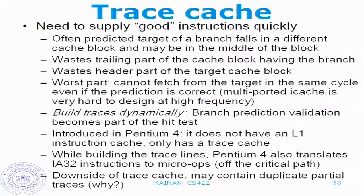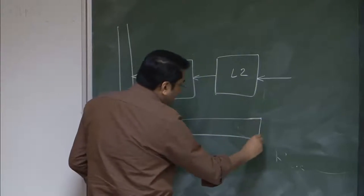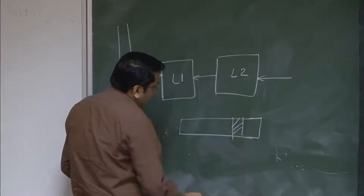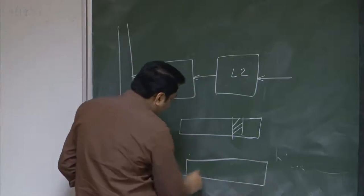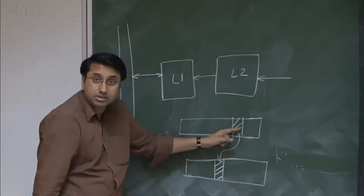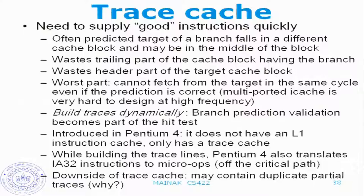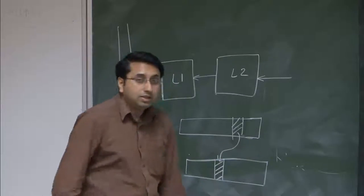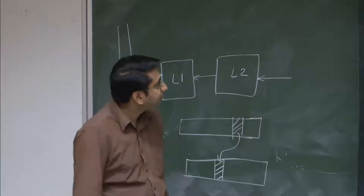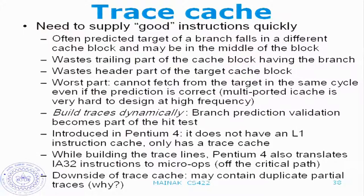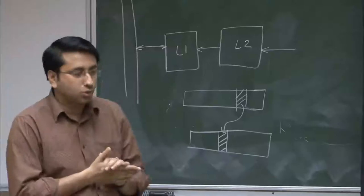Often the predicted target of a branch falls in a different cache block, maybe in the middle of a block. You are currently executing an instruction in a particular cache block and you have a branch instruction somewhere. The target falls in the middle of some other cache block. So you execute the branch and the next instruction is in that other block, meaning the trailing part of the first cache block and the header part of the target cache block both go to waste. And the worst part is that you cannot fetch from the target in the same cycle, even if the prediction is correct, because you usually fetch from a single cache block in a particular cycle.